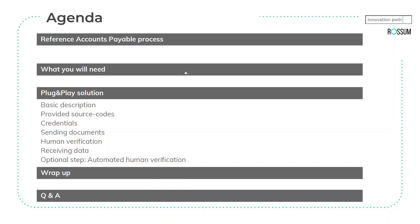Before we start, I'd like to tell you the agenda of today's webinar. We will describe a reference accounts payable process. Here at Rossum, we know that every process is different, but it's always good to see where in a reference process we are. We'll tell you what you need to replicate all the steps, and we will show you the whole solution in action. Then there will be a place for your questions — please feel free to write them to the chat and we will try to answer. We will address questions at several points, and any we can't answer during the webinar will be addressed in your email.